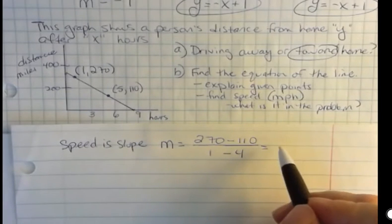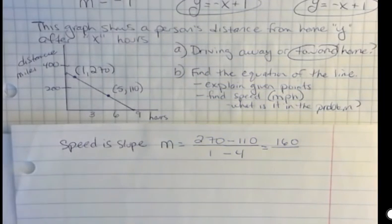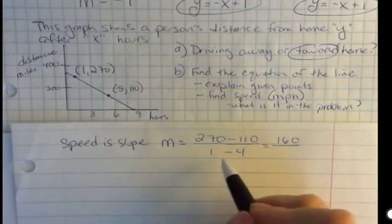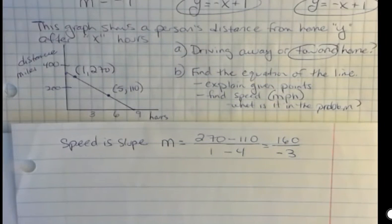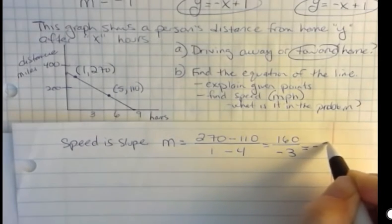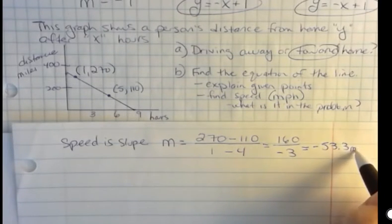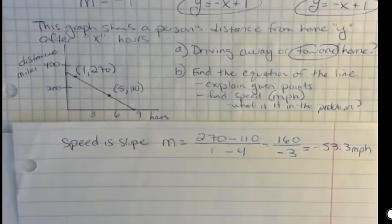270 minus 110 is 160. And you can also do any of this on your calculator. This is over negative three, and I'm just dividing this divided by negative three, and it gives me 53.3 negative. So negative 53.3 repeating forever miles per hour. That's what I have for my slope. That's the miles per hour.